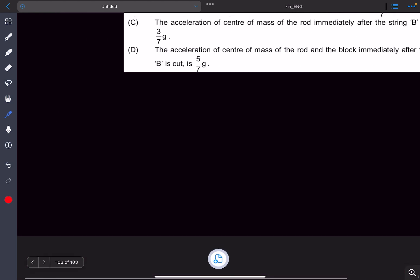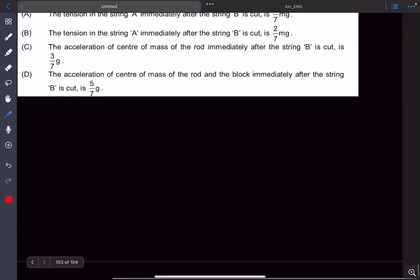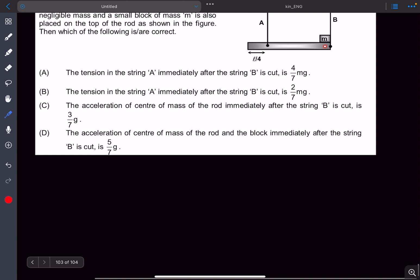So we need to check if the acceleration of this point on the rod is greater or lesser than g. If this point moved with an acceleration that is greater than g, then what will happen is there won't be any contact between the mass M and the rod.